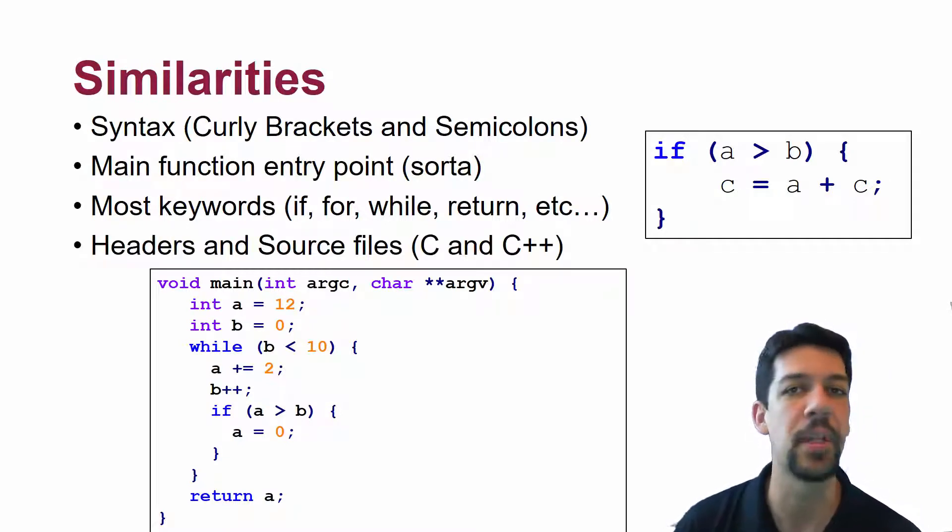They also, C and C++, organize their code using header files and source files. So .h files and .c or .cpp files are the same sort of organization.